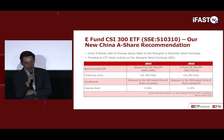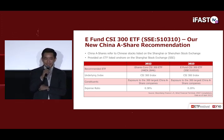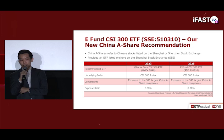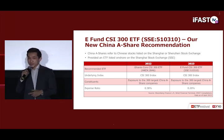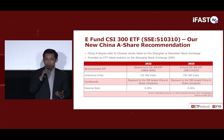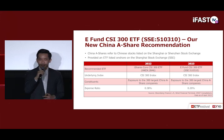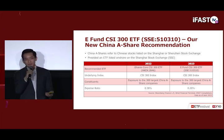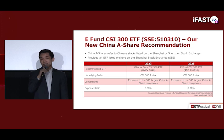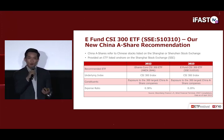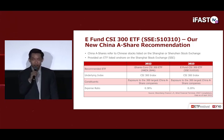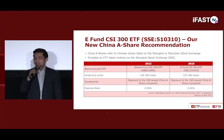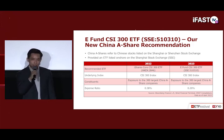Last year we recommended the iShares Core CSI 300 ETF. This year we recommend the E-Fund CSI 300 ETF, an onshore-listed ETF, because of its low expense ratio, larger AUM, and better liquidity. For investors already investing in the iShares Core CSI 300 ETF via a regular savings plan, or who prefer an ETF not listed on Chinese exchanges, it remains a good option as it also tracks the CSI 300 Index and has large AUM and liquidity.